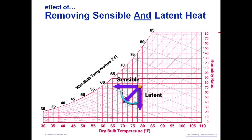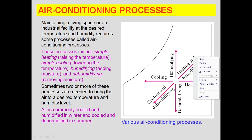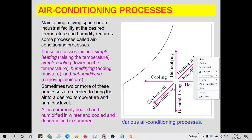There are eight psychrometric processes; six are indicated on the graph. If the initial point moves horizontally rightward, that is a heating process; leftward is cooling. Vertically upward is humidification — adding moisture without changing dry bulb temperature. Vertically downward is dehumidification — reducing moisture content. In inclined directions, it is a combination of these basic processes.